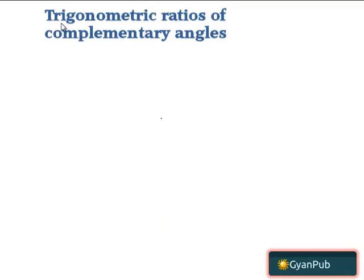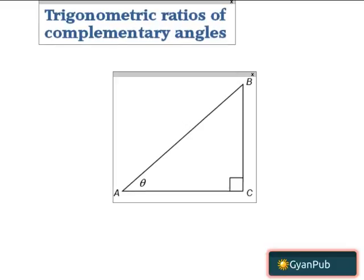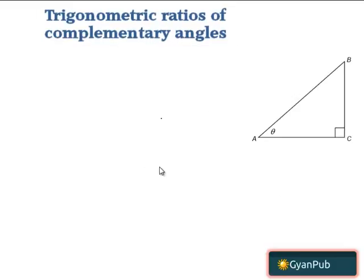Let us discuss the trigonometric ratios of complementary angles. Initially, let us consider a right angle triangle ABC as shown in the figure. In this right angle triangle ABC, angle C is equal to 90 degrees and angle A is equal to theta.